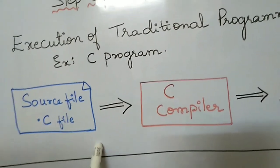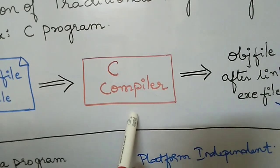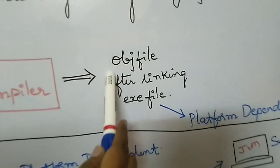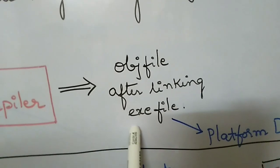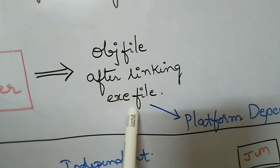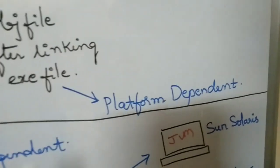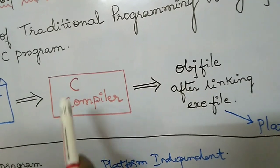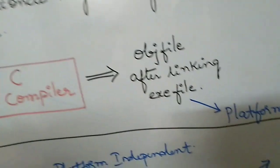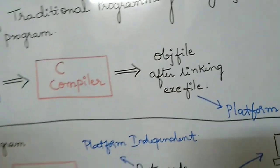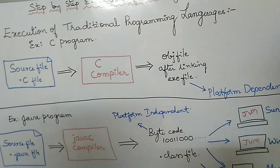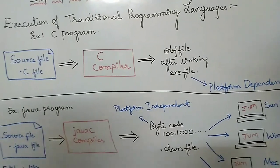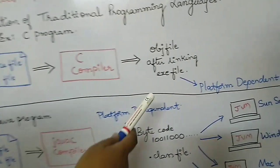This source file is given to the C compiler, and the C compiler will generate the object file. After linking, you will get the exe file. This exe file is platform dependent, because the C compiler generates code based on the operating system — it is machine dependent.